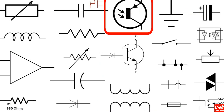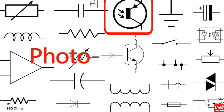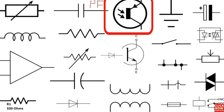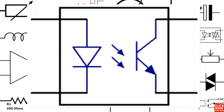This is the phototransistor. It is basically a transistor, but we call it a phototransistor because the base receives light, not voltage. You can find this kind of transistor in components like optocouplers.